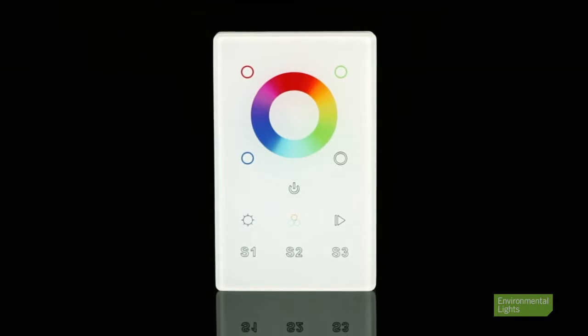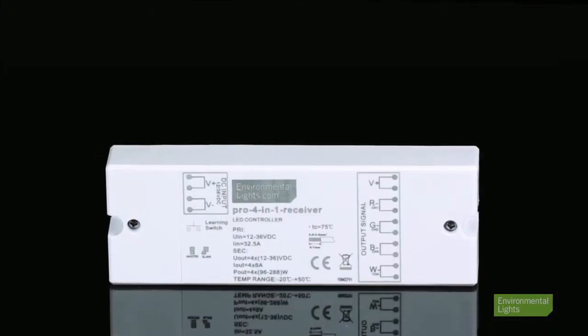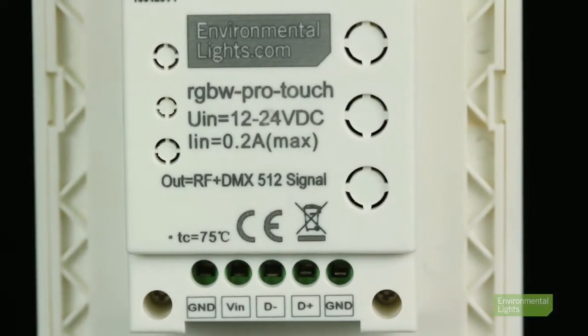The Pro RGB color plus LED touch controller provides a wide array of controls for your RGB or RGB color plus LED lighting. It is compatible with the LED Pro 4-in-1 receiver and also provides a wired DMX output for use with any of our four channel DMX decoders.